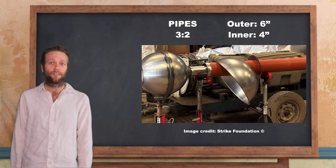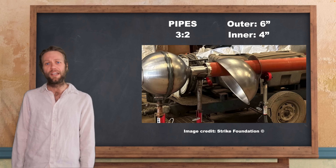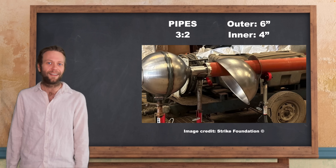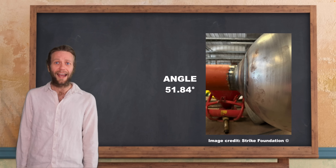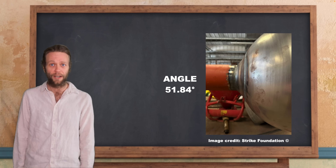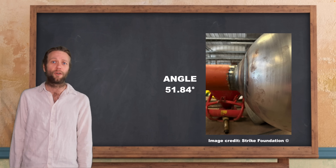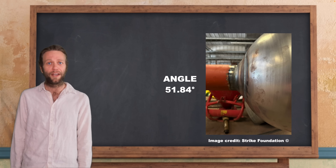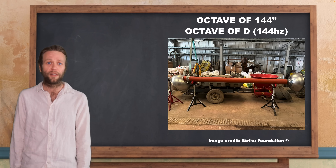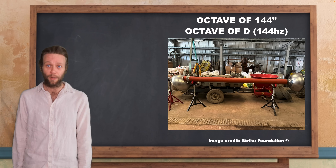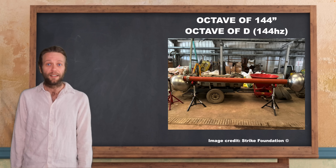The outer pipe is six inches in diameter, the inner pipe four inches in diameter — the ratio of outer to inner being 3:2. Malcolm also gives the angle of the transition between the spheres and the pipes: 51.84 degrees. If you've studied the mathematical theory of the plasmoid unification model, you'll know the significance of those numbers. We also know that the length of the pipes must be 144 inches, or an octave of 144 inches — for that you'll need to learn your A432 physical scale.